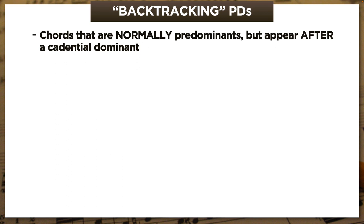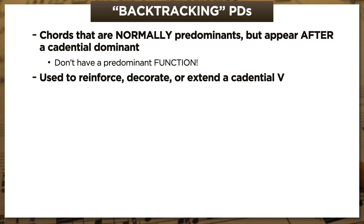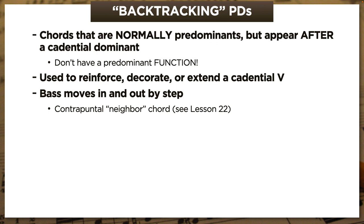Let's review the main points. Backtracking PDs are chords that normally serve as predominants, but which appear after a cadential dominant—so in that context, they don't have a predominant function. Instead, composers use them to reinforce, decorate, or extend that cadential 5. And because their bass almost always moves in and out by step, it's helpful to think of them as contrapuntal neighbor chords. Finally, they might be way more common in minor keys—I'm adding this at the last minute because literally every excerpt in this video and all the ones I have stashed away from classroom use are all in minor. Every single one.